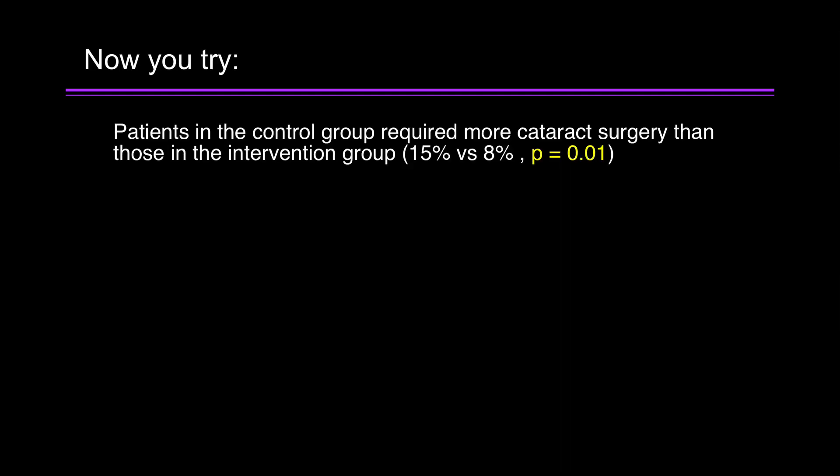Now you try. Patients in the control group required more cataract surgery than those in the intervention group. 15% versus 8%. P equals 0.01. Is that statistically significant or due to chance? It's statistically significant. Why? Because the p-value is less than 0.05.